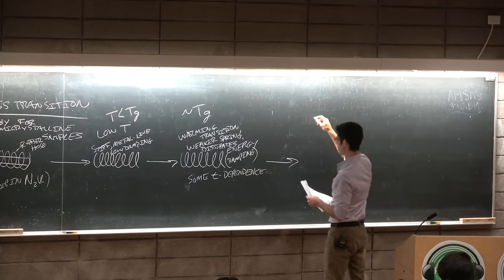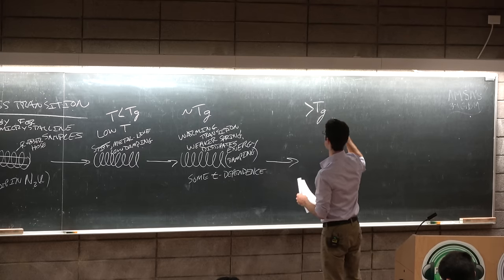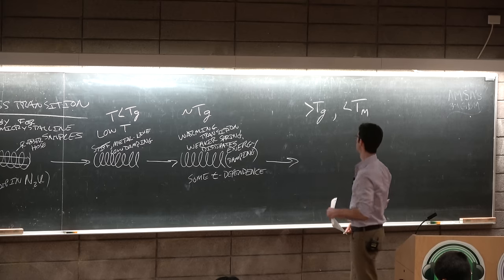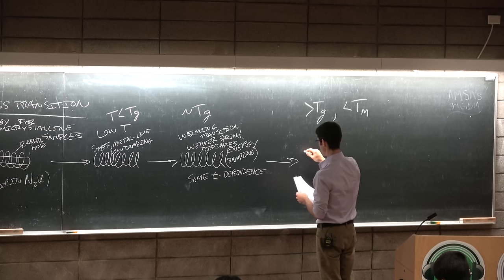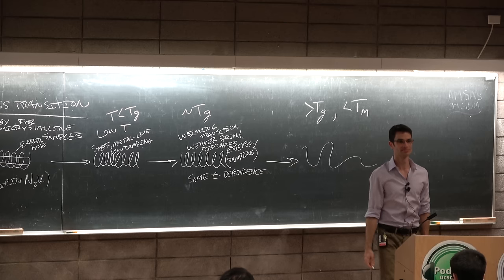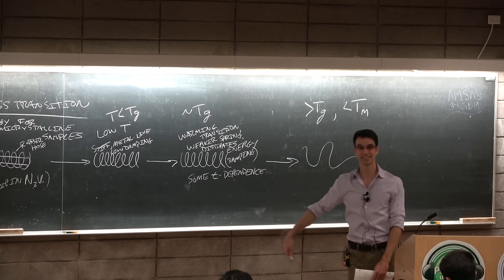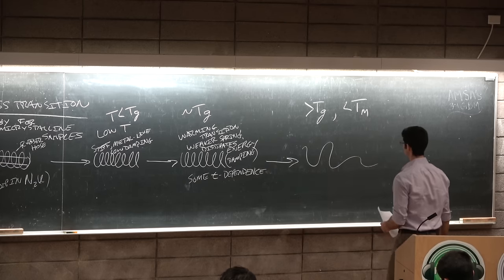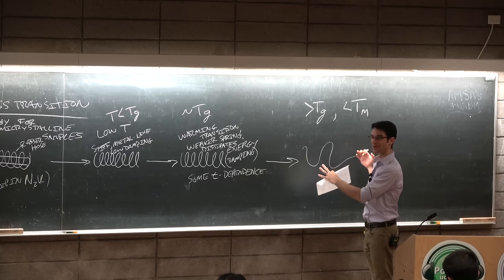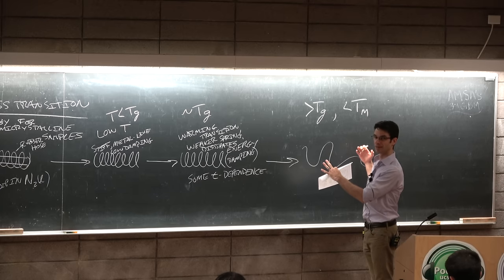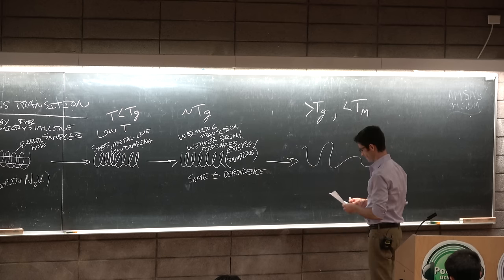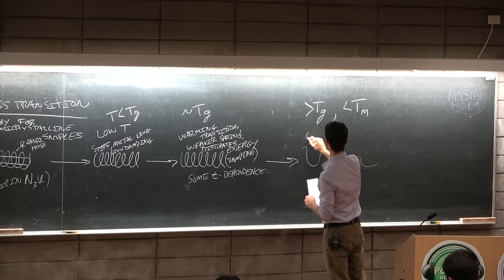Now suppose you are now solidly above Tg but still below Tm. Now you have a completely warmed rubber hose that can no longer maintain its helical structure. Remember, this is a macroscopic object. This is not just a polymer chain. It's literally a drawing with chalk representing a rubber hose.